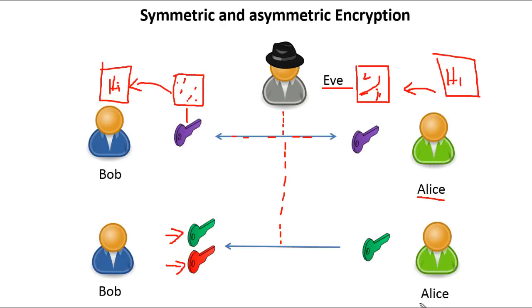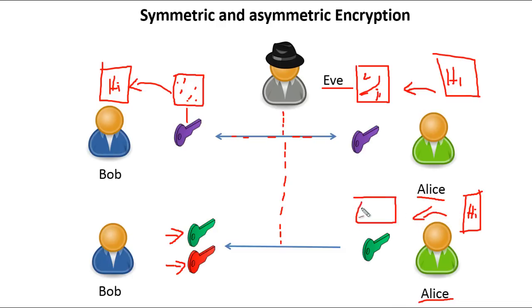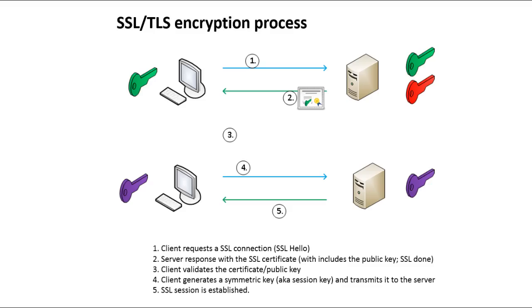Alice, who wants to transmit secure communication over that wire, takes the message 'hi', encrypts it with Bob's public key, and transmits the ciphertext over the unsecured wire. Only Bob, who has the private key, is able to decipher the message. Now that we know about symmetric and asymmetric encryption, we have the tools to better understand the TLS encryption process.